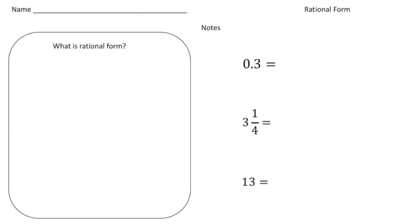Alright, so what exactly is rational form? Well, you should know by now that a rational number is any number that can be written as a fraction. And in fact, the term ratio is in the term rational. So rational form is basically when a number is written as a fraction. So let's write that down. When a number is written as a fraction.